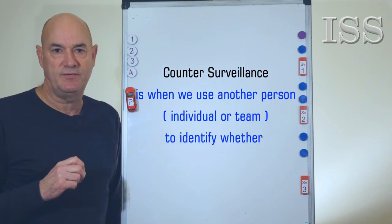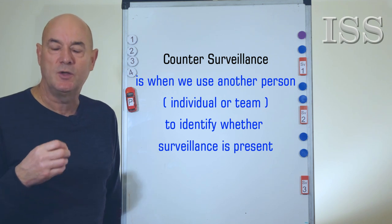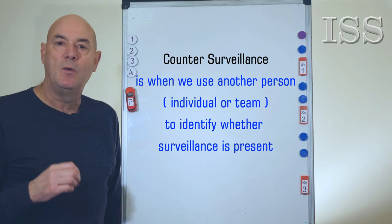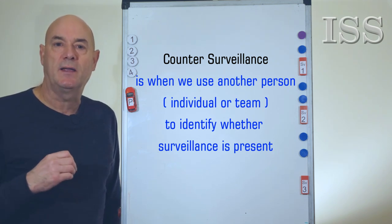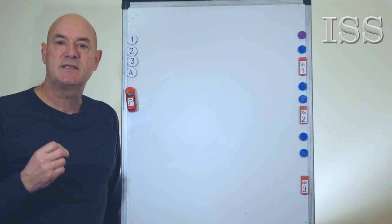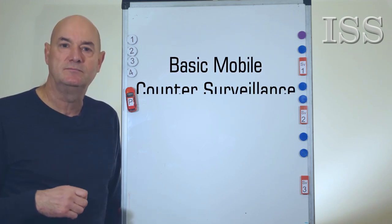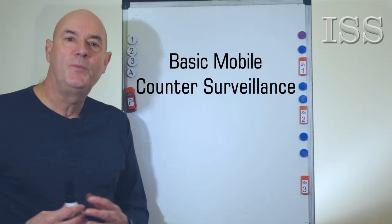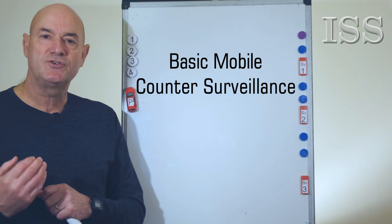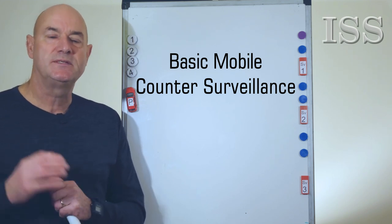Counter surveillance is very different. It's when we bring in somebody else — it could be a single person or it could be a full counter surveillance team — and what they effectively do is watch our back through a series of what we call choke points. It's counter surveillance in its very basic form that we're going to look at now. The principles of counter surveillance are very sophisticated, but what we're going to try and do is break it down into various parts in a simple format.